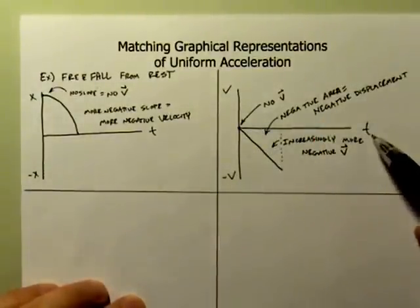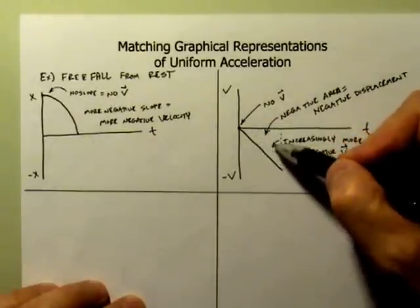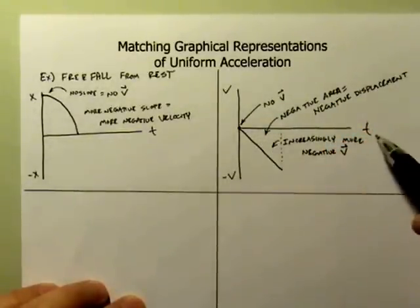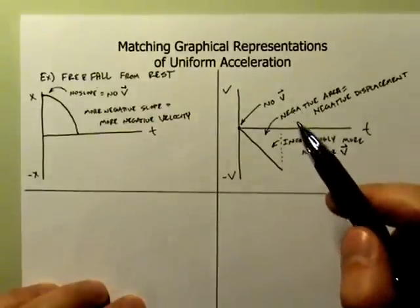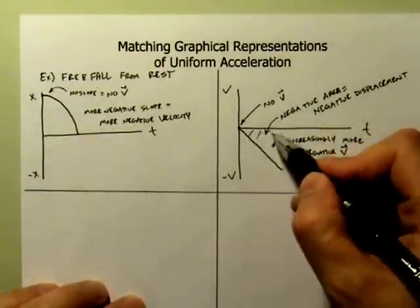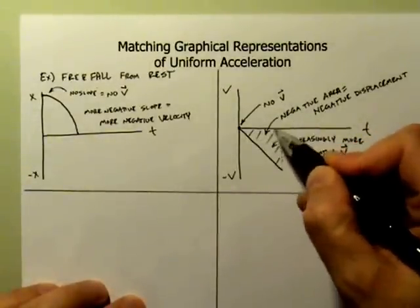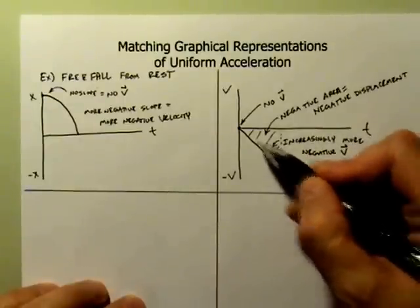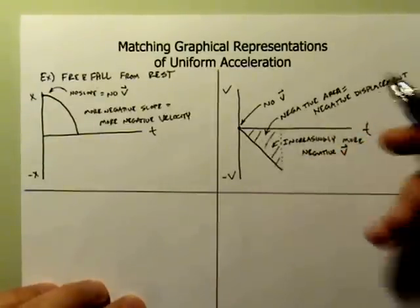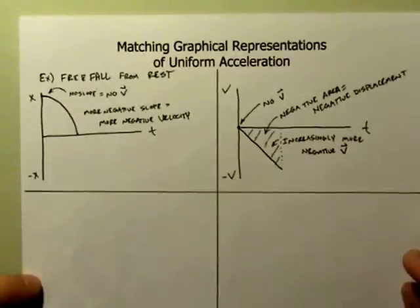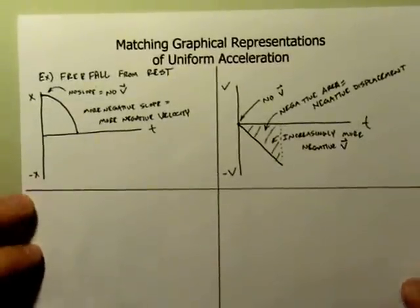So I ended up with negative V times T, and obviously you should recognize that I wouldn't simply multiply V times T. I would take one half V times T in order to look at the area underneath this line. Okay, so that was an object falling from rest.